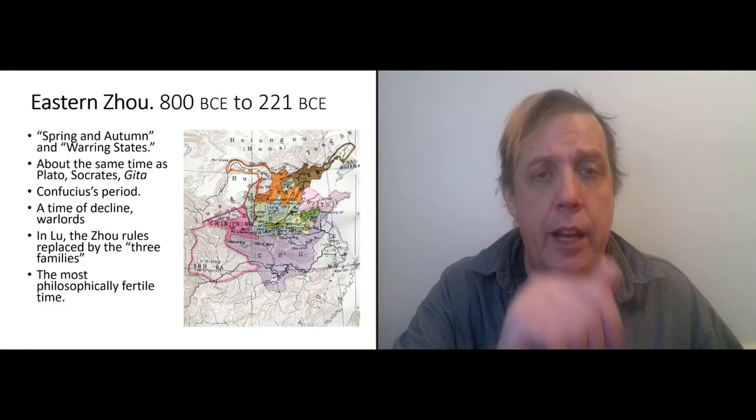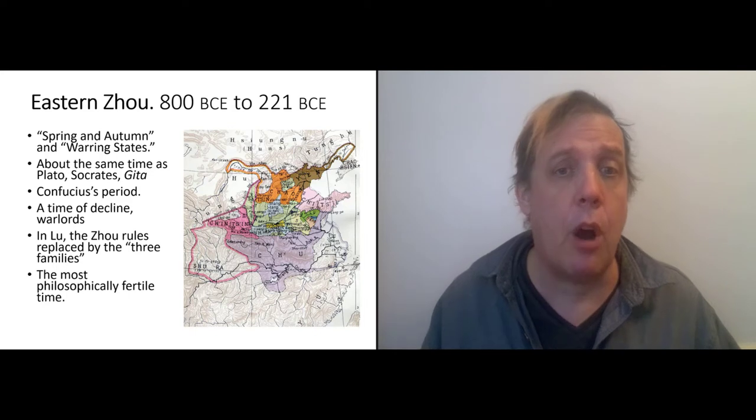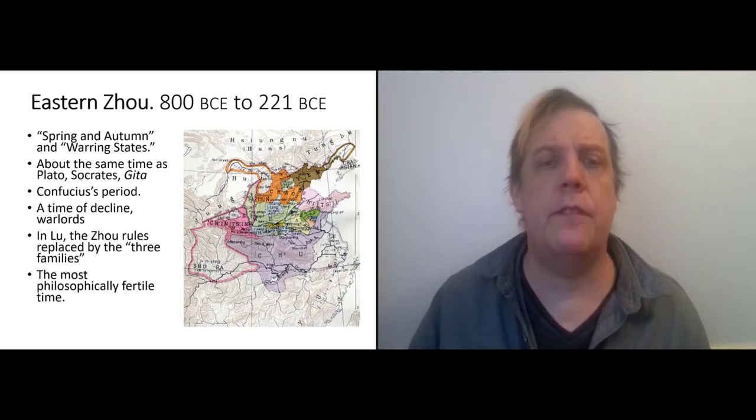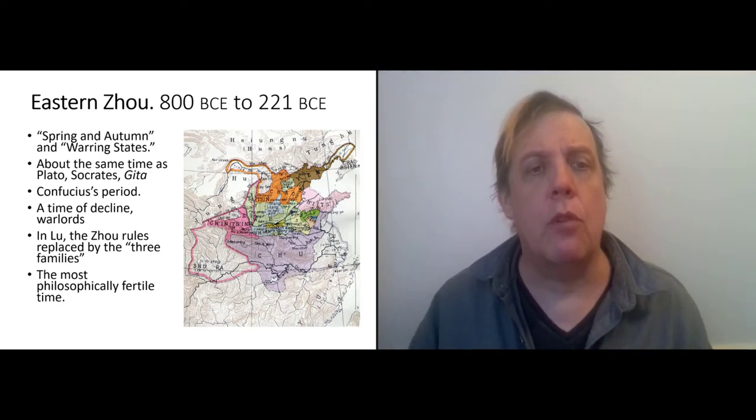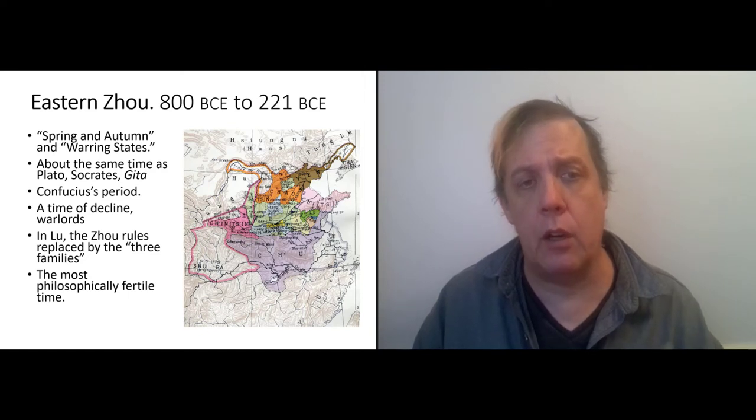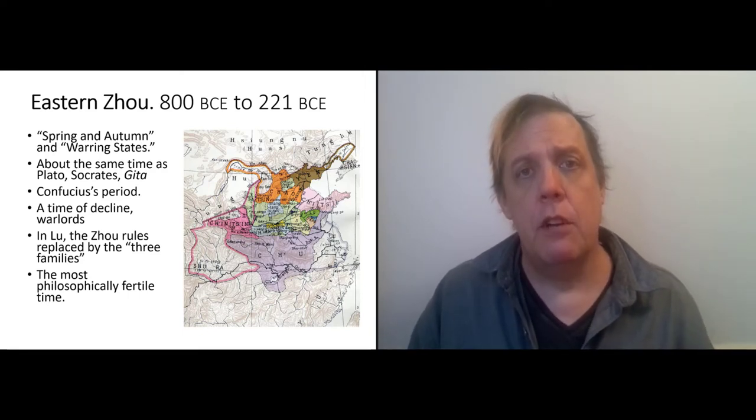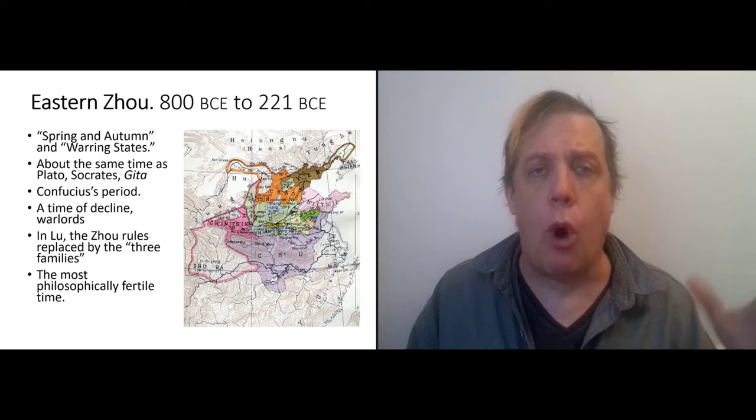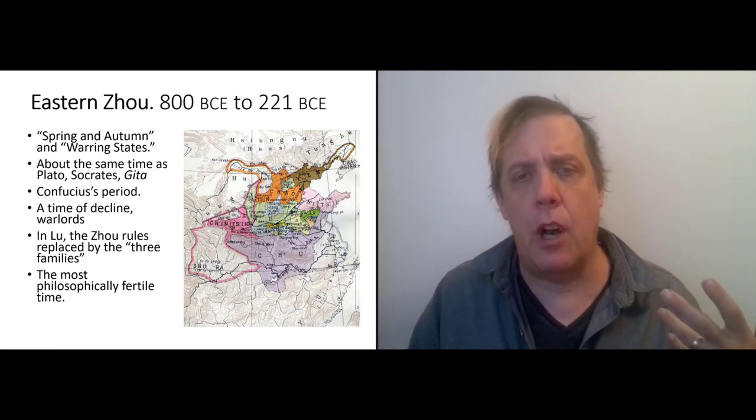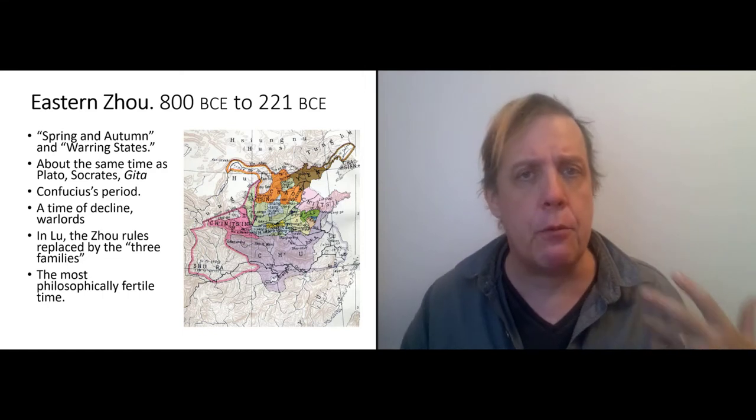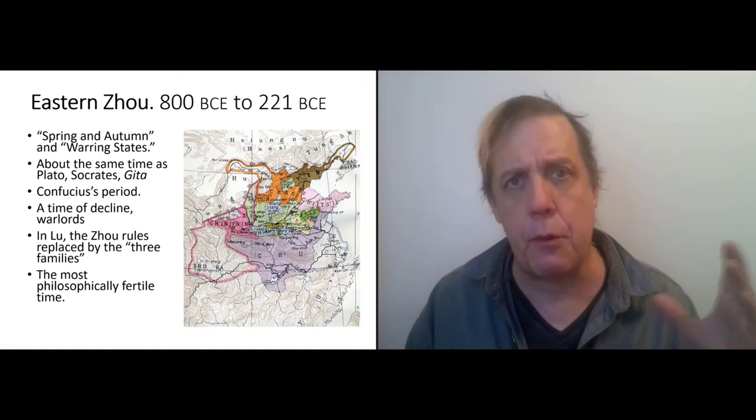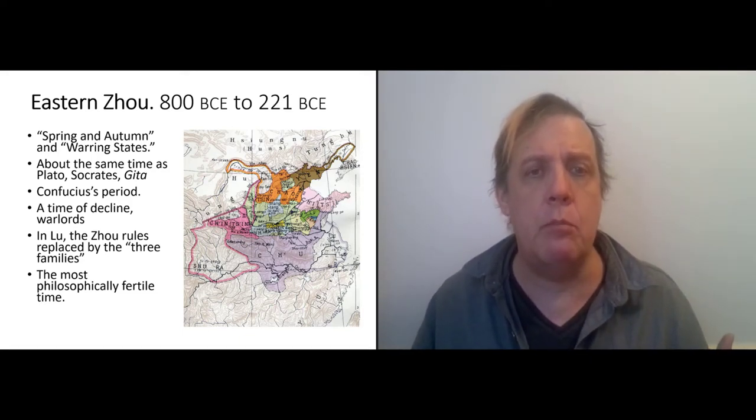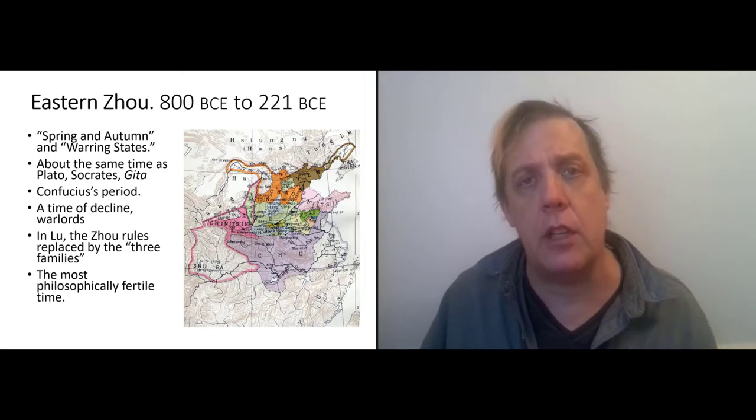The important thing here is that Confucius didn't see himself as inventing new philosophical ideas. He was an expert in the philosophical ideas that had come down to him from the prior golden age of the Zhou dynasty. So what happens around 800 BCE is that the Zhou empire falls apart. And what's left of it is kind of nominal. So in the state of Lu, where Confucius lived, there were still nominal Zhou rulers.